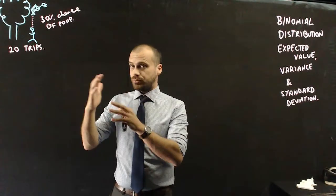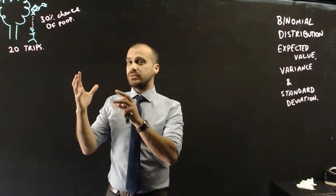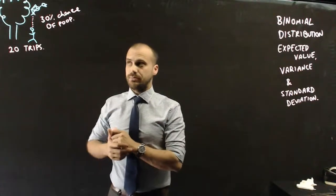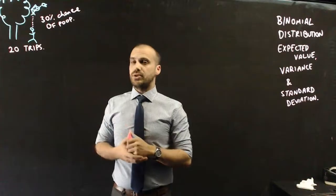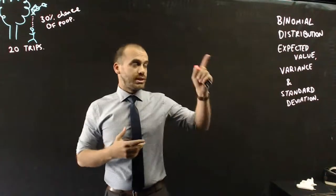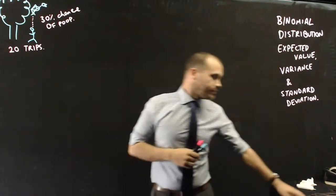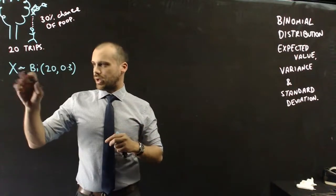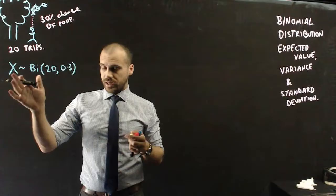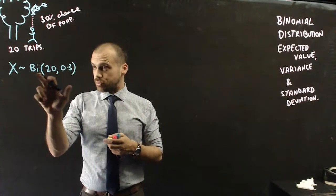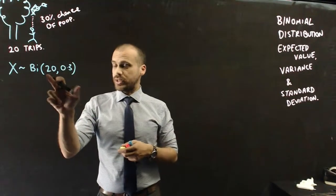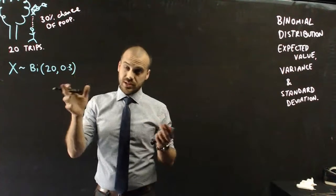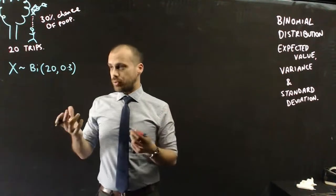But there's an amount of times that you would expect to get pooped on if this bird is pooping 30% of the time. And we can do expected value to figure that out. I can summarize that question just with this line here. The random variable X follows a binomial distribution where there are 20 trials, and the probability of success, poop on your head, is 0.3.